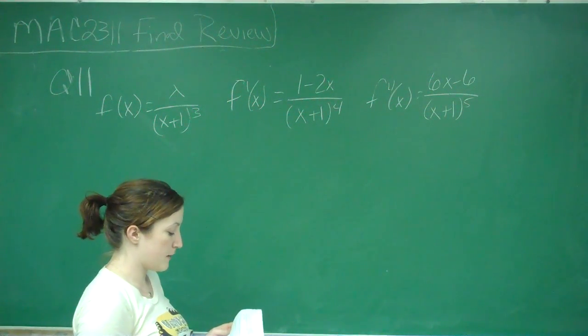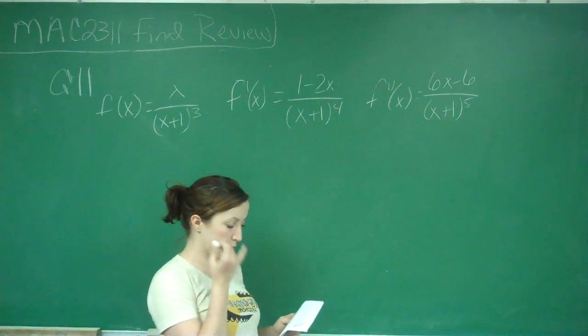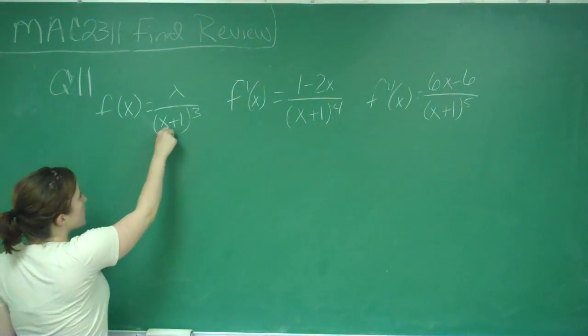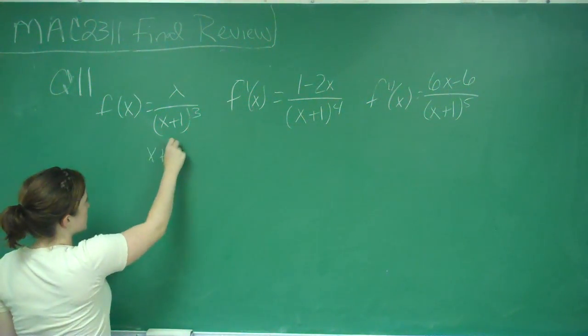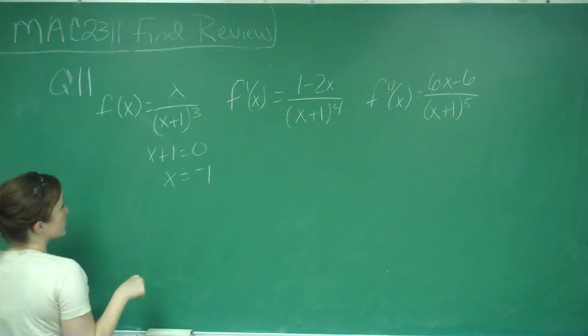So it says, f of x has a vertical asymptote x equals negative 1, horizontal asymptote y equals 0. So we look here at our first one. We do have our vertical asymptote when x plus 1 is equal to 0, so x equals negative 1. So that first part is true.